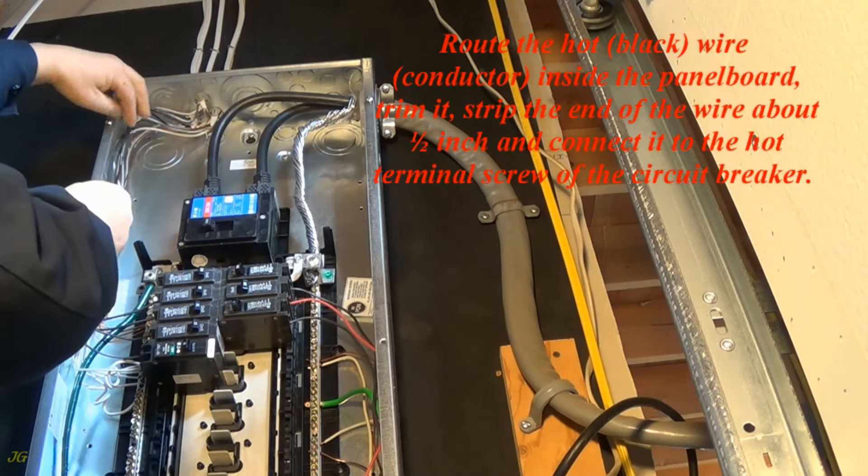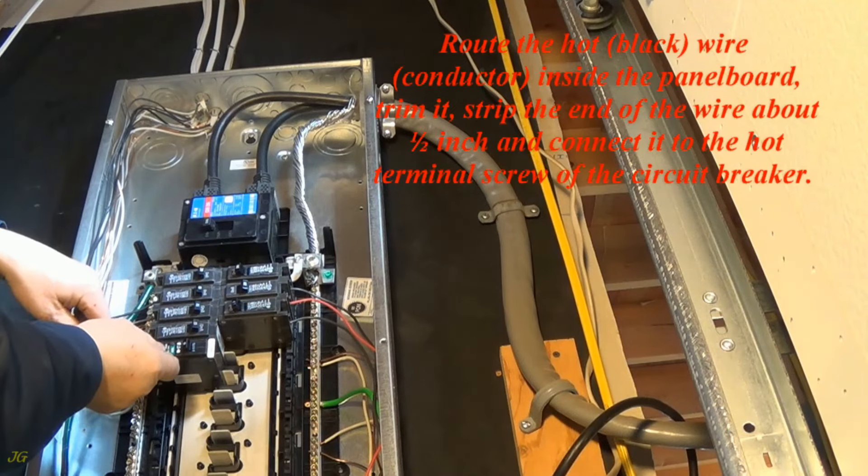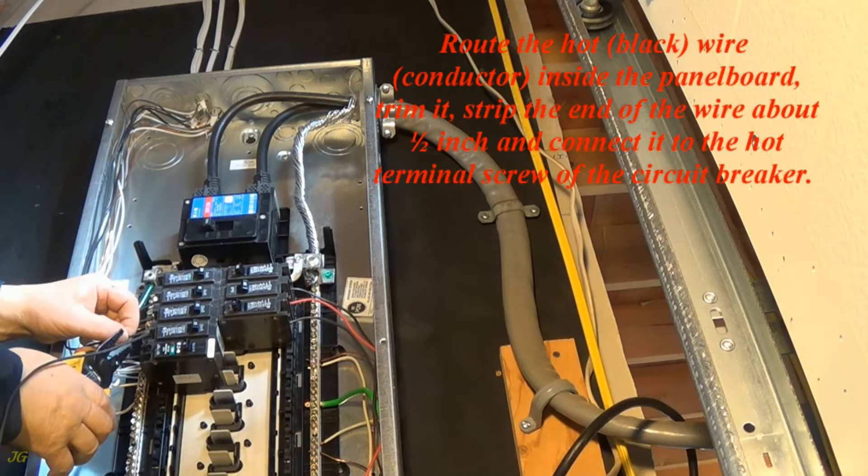Route the hot, black, wire conductor inside the panel board, trim it, strip the end of the wire about one half inch and connect it to the hot terminal screw of the circuit breaker.